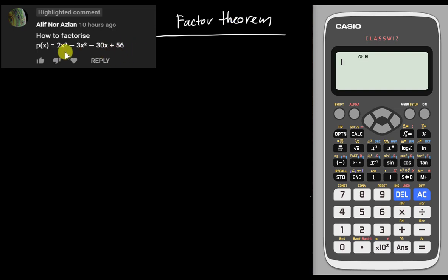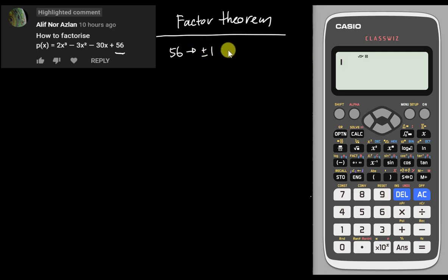For the factor theorem, the first thing is you need to find the constant number — in this case it's 56. You need to find a factor of 56. There are a lot of possibilities: it can be divided by positive or negative one, positive or negative two, positive or negative four, and so on.